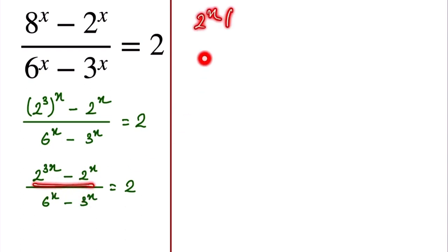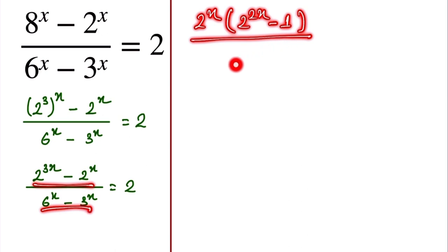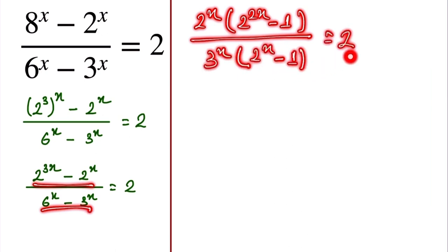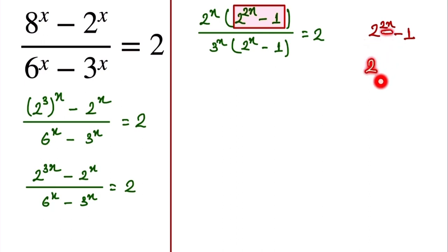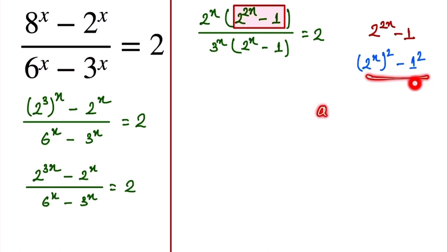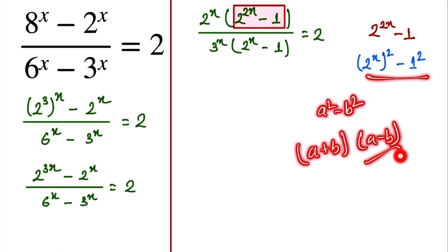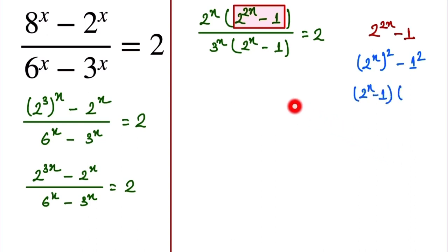Here we take out 2 to the power x as a common factor from the numerator, giving 2 to the power x times (2 to the power 2x minus 1). From the denominator we take 3 to the power x as common, giving 3 to the power x times (2 to the power x minus 1), and this equals 2. Now we notice that 2 to the power 2x minus 1 squared can be broken using the difference of squares: a squared minus b squared equals (a plus b)(a minus b). So here it becomes (2 to the power x minus 1)(2 to the power x plus 1).